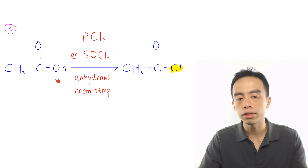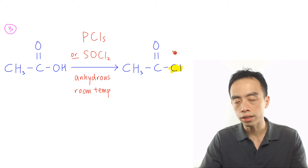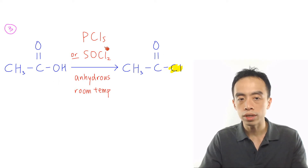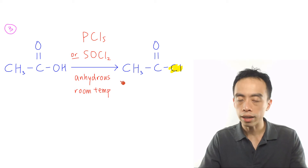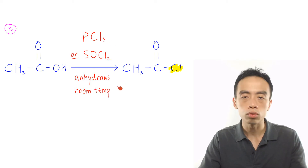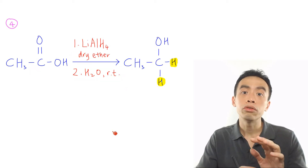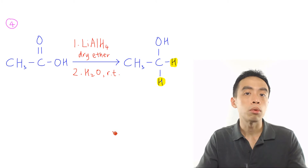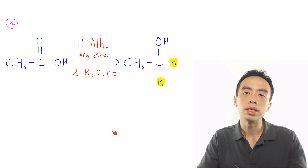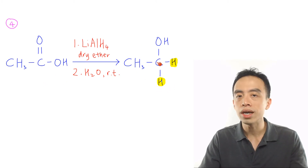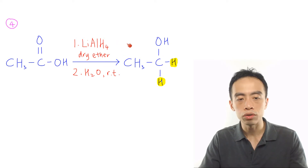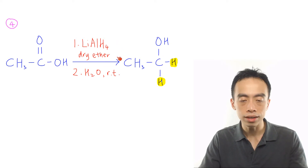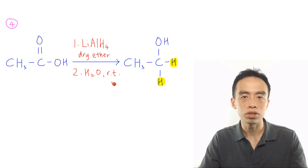The third masnone reaction of carboxylic acid is the nucleophilic substitution of acid to form acid chloride. This is done using PCl5 or SOCl2 anhydrous at room temperature. The final reaction of our carboxylic acid would be the reduction of acid to form primary alcohol. This is done using lithium aluminum hydride in dry ether, followed by water at room temperature.